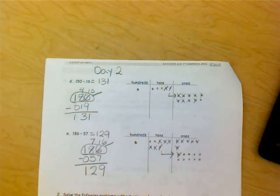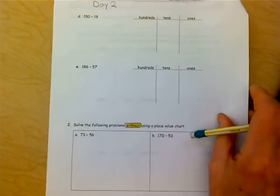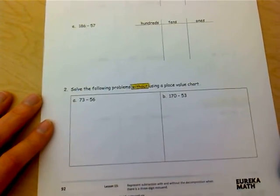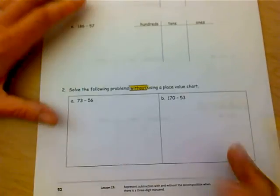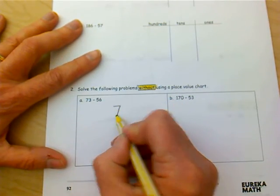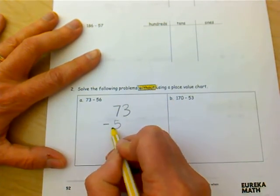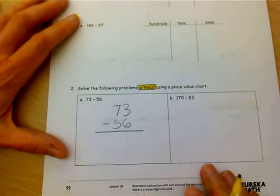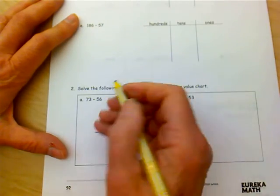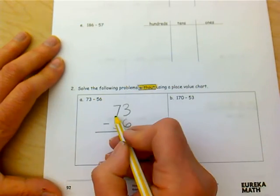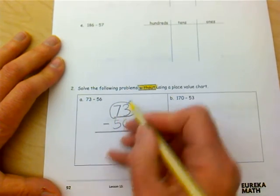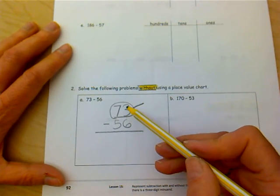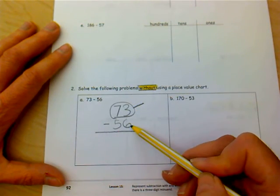Now I'm just going to do a quick little exchange here. I'm going to go over to problem two. I would like to work these with you if I could, because we're just now starting to get into a position of showing 73 take away 56 without the chip model or the place value chart. So I've set my problem up vertically now, and I am going to take a close look at my whole.